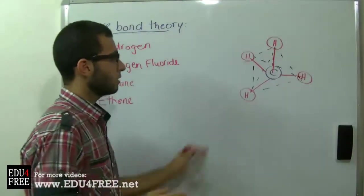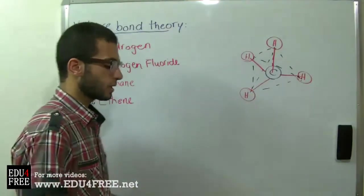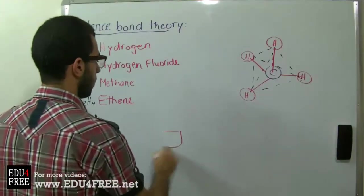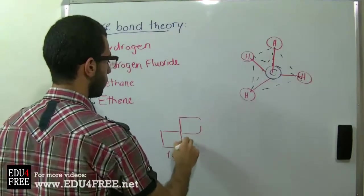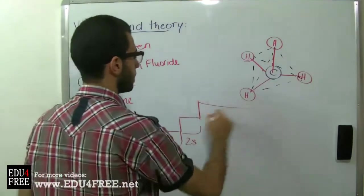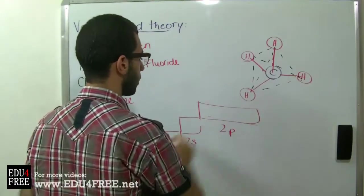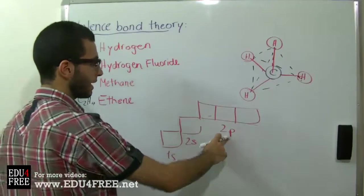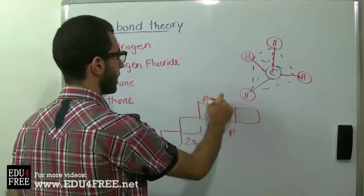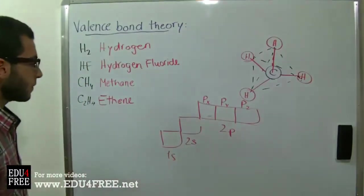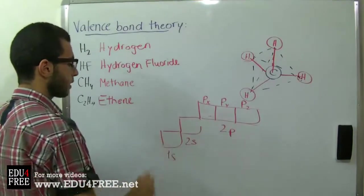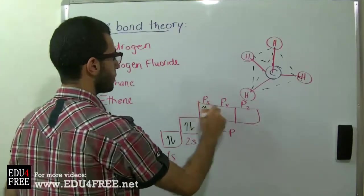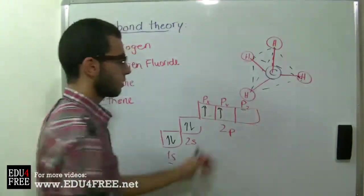How did this happen? Carbon contains just six electrons. Looking at its electronic configuration: we have the 1s, then the 2s orbital, and then the 2p sub-level. The 2p sub-level contains three orbitals: px, py, and pz. The six electrons are distributed as two in 1s, two in 2s, and two in the 2p, leaving the pz as a vacant orbital.